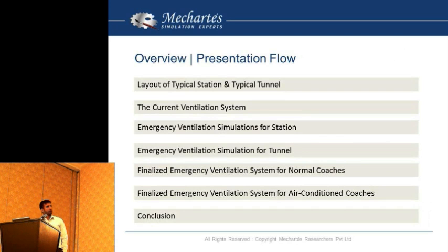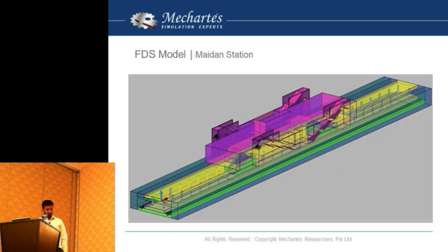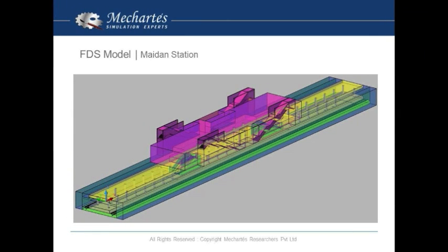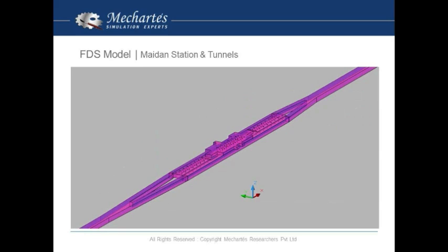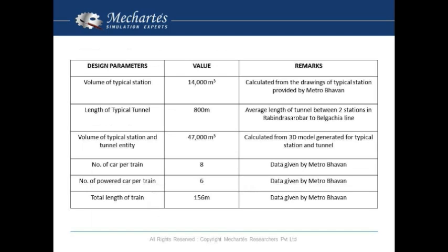These are the presentation topics I'm going to cover. This was the layout — there are four entrances on the four corners of the platform. It's an island-type layout in which there is one platform in the middle and two tracks on the side, connected to the tunnels. There are around 18 stations in the metro line, and 15 of them were of the same design with a constant distance between two stations, so one model was taken as a typical design for all stations.